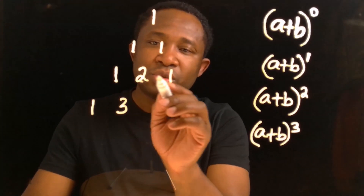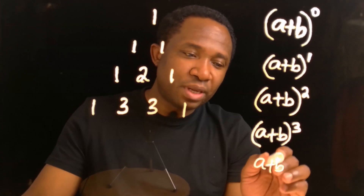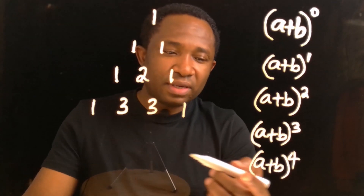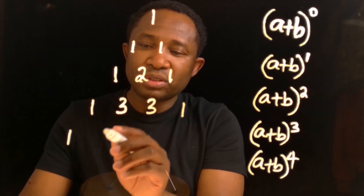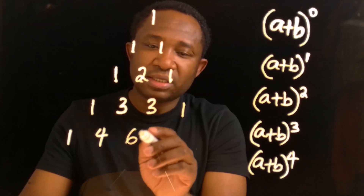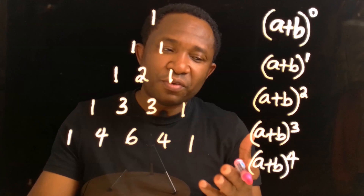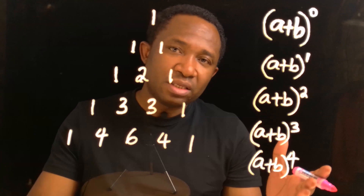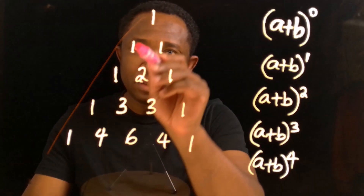If we expand these brackets where the highest power is 3, the expansion will give us coefficients of 1, 1 plus 2 is 3, 2 plus 1 is 3, and we end with 1. For a plus b all to the power of 4, the coefficients will be 1, 1 plus 3 is 4, 3 plus 3 is 6, 3 plus 1 is 4, and we end with 1. We can do this for 5, 6, even 10 or 15 to any power. If you continue doing this expansion, you will see that we are actually forming a triangle.